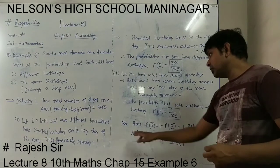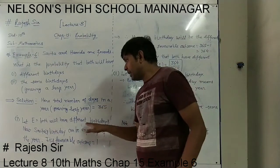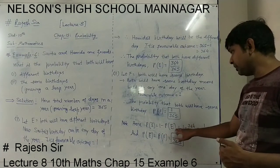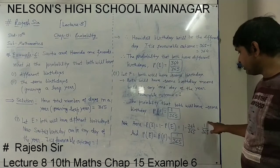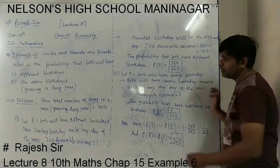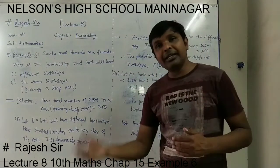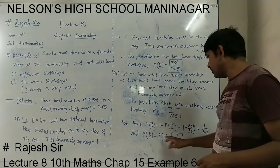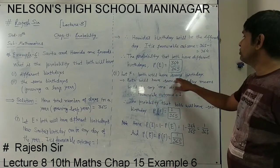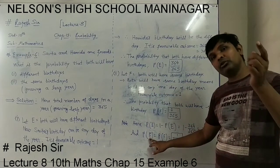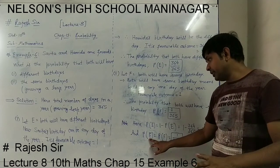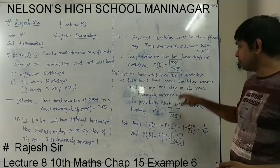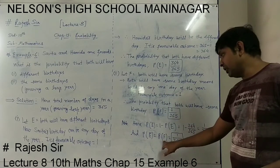Here, note that P(E-bar) means both will have different birthdays — E-bar means both will not have the same birthday. So P(F) = 1/365. On the other way, P(E-bar) shows P(F), because P(F) is both will have the same birthday. E-bar shows both will have different birthdays; if they do not have different birthdays, it means they will have the same birthday — that is F. So P(E-bar) = P(F) = 1/365.